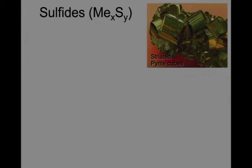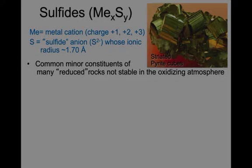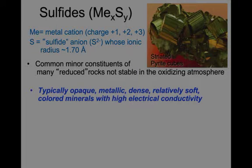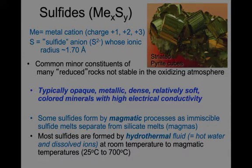Now let's look at five examples of sulfides. Sulfides have a general formula MeₓSᵧ, where M is a metal cation with a charge of 1, 2, or 3, and S is the sulfide anion S²⁻ with an ionic radius of 1.7. On the right, striated pyrite cubes. Sulfides are common minor constituents of many reduced rocks; they are not stable in the oxidizing atmosphere. Typically they are opaque, metallic, dense, relatively soft, colored minerals with high electrical conductivity. Some sulfides form by magmatic processes, such as immiscible sulfide melts that separate from silicate magmas. Most sulfides are formed by hydrothermal fluid — hot water with dissolved ions that precipitate sulfides at room temperature to magmatic temperatures.